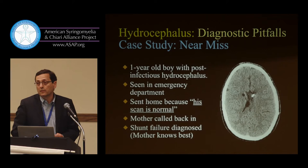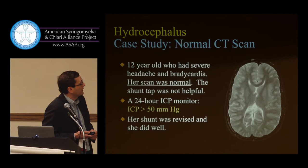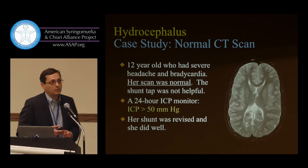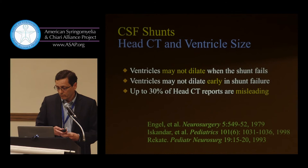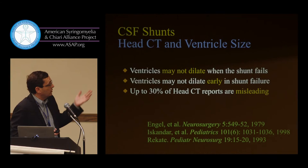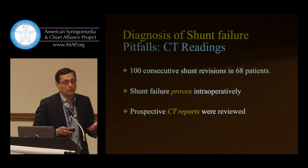A 12-year-old had a severe headache and bradycardia. His scan was normal. I placed an intracranial pressure monitor and the pressure was 50 — normal being less than 15 — with small, normal-appearing ventricles. What we're discovering is that the ventricles may not dilate when the shunt fails, or may not dilate early enough for you to discover it in time. Up to 30% of head CT reports can be misleading.